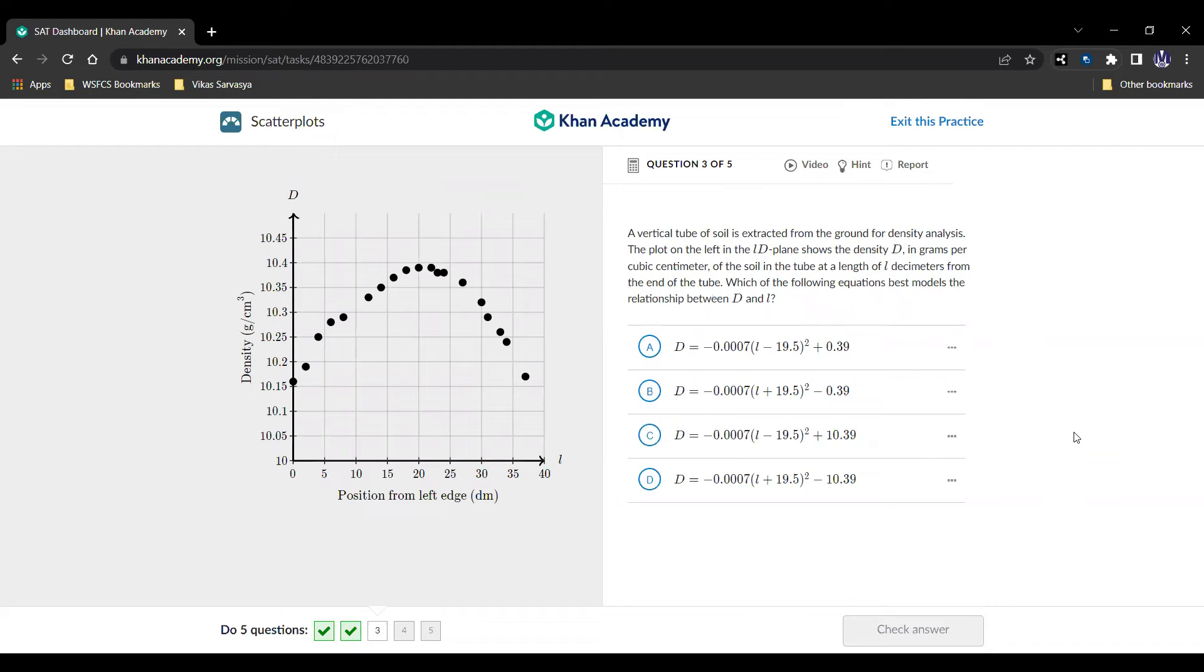Question 3, here we are. We're given a graph of the density in grams per cubic centimeter versus the position from the left edge in dm, which I guess they'll tell us what dm means. I feel like that's some kind of measurement of a meter, probably like a decimeter, but I don't think it matters for this question. Let's read the prompt, and here it is. A vertical tube of soil is extracted from the ground for density analysis. The plot on the left in the ld plane shows the density d in grams per cubic centimeter of the soil in the tube at a length of l decimeters, so it's in decimeters, from the end of the tube. Which of the following equations best models the relationship between d and l?